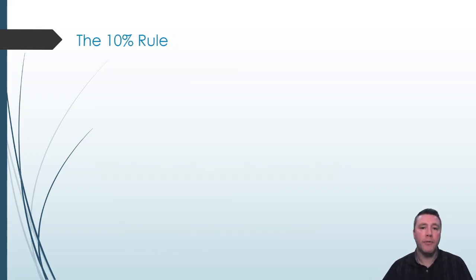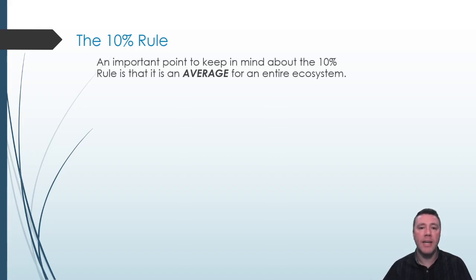An important feature of the 10% rule that always needs to be kept in mind is that it is an average for all organisms in an entire ecosystem. Insects, birds, fish, fungi, reptiles, mammals, bacteria, plants, and more constitute all the living things in an ecosystem. Some of those organisms are more efficient than others, so the 10% rule takes that into account as the average amount of energy available to transfer from one trophic level to another.